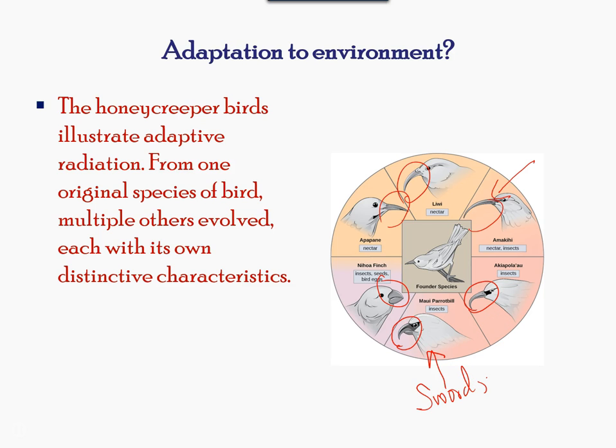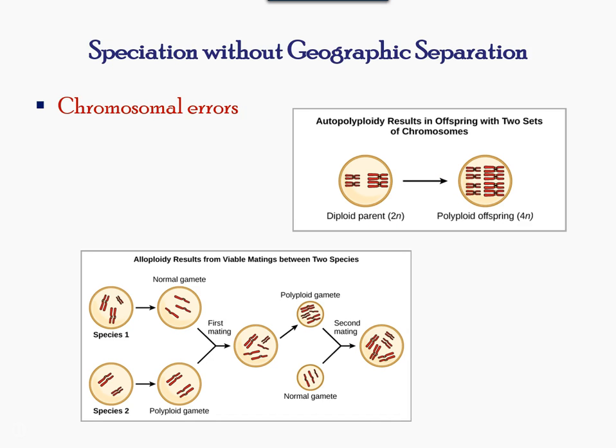Sometimes speciation occurs without geographical separation, such as an error in sexual reproduction in which chromosomes do not get separated properly. This results in multiple copies of the allele. In animals, this typically results in abnormalities and is usually lethal.